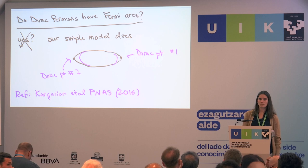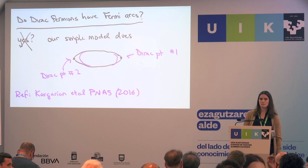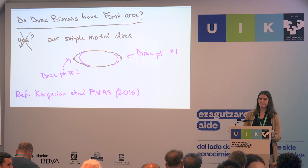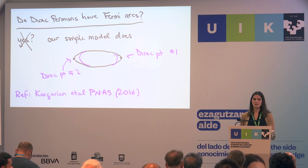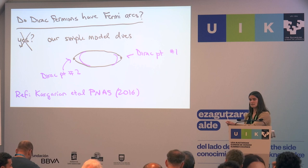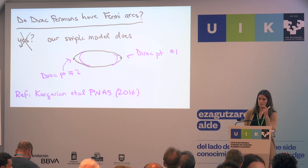Regarding Rashba spin-orbit coupling — Rashba coupling breaks inversion symmetry. So in that case you will have inversion symmetry breaking, but a product symmetry could be allowed. In principle you could have a system which has Rashba to break inversion and has broken time reversal, but time reversal and inversion together could be preserved, and that system would still be allowed to have Dirac points.